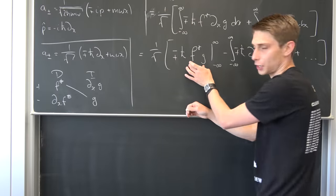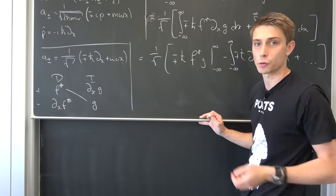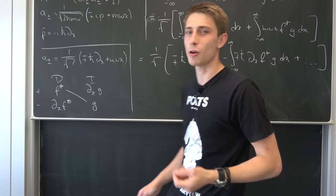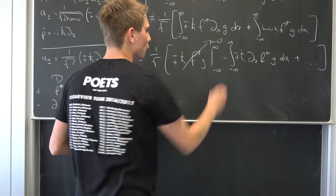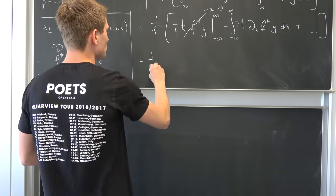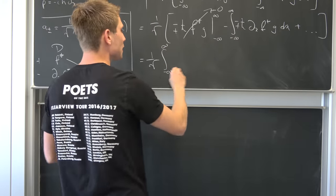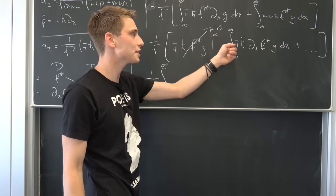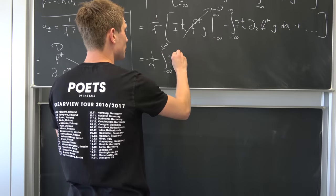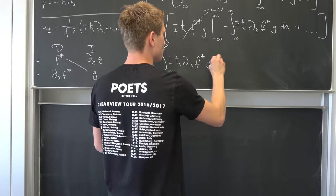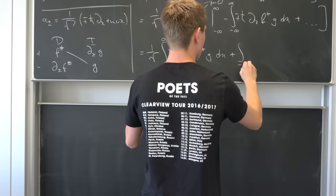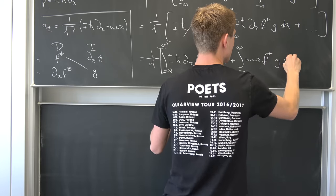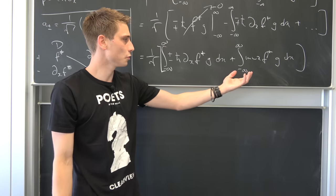Just as stated before, these are wave functions, and one of the boundary conditions for a wave function is that it is square-integrable — meaning it is normalizable — so in the limit as x approaches plus or minus infinity it goes to zero. So the boundary term vanishes, and we are left with 1 over the square root times the integral from minus infinity to infinity, where the sign changes: minus and minus become positive, and minus and plus become negative — giving us ±ħ ∂ₓ(f conjugate) times g dx.